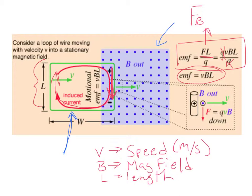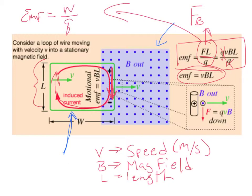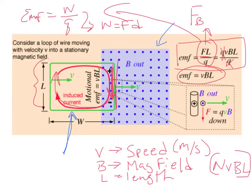This comes from the fact that EMF equals work done per unit charge. Work equals force times distance, so here we have the magnetic force exerted over a specific distance causing those electrons to move. If we have multiple loops, that just becomes N × vBL, where N is the number of loops. We'll talk about that a little more further on.